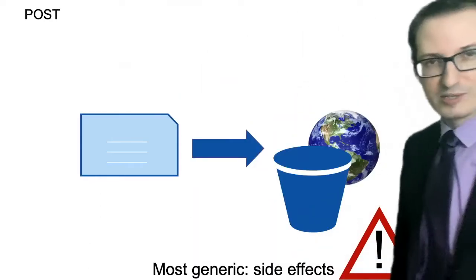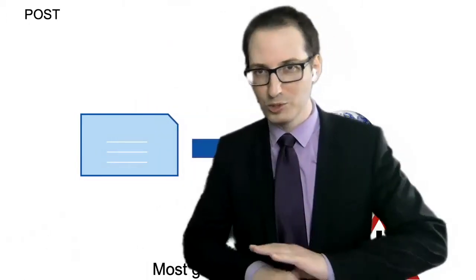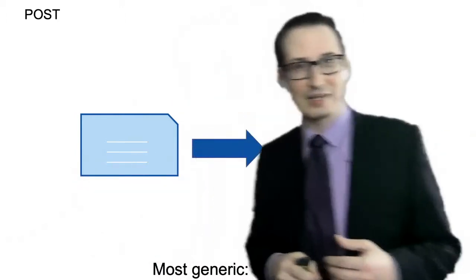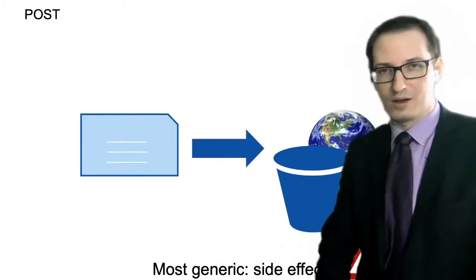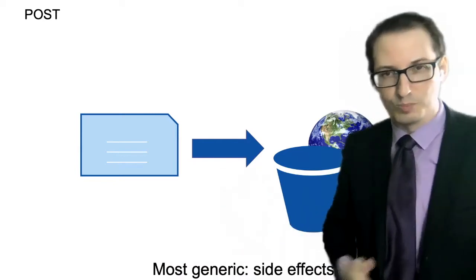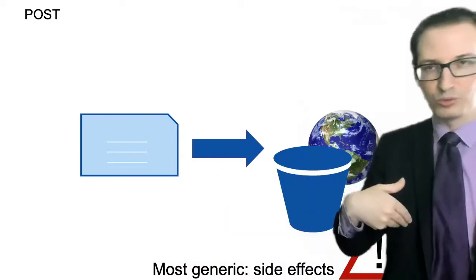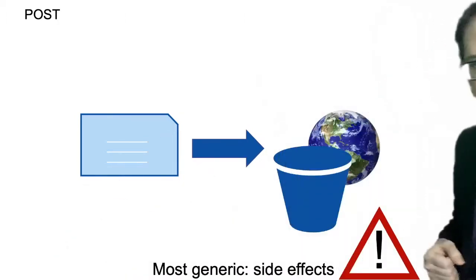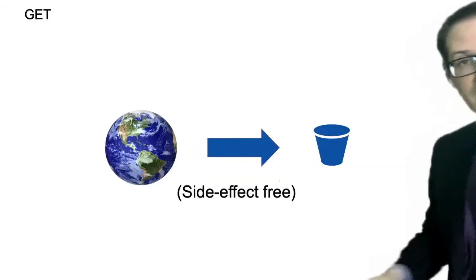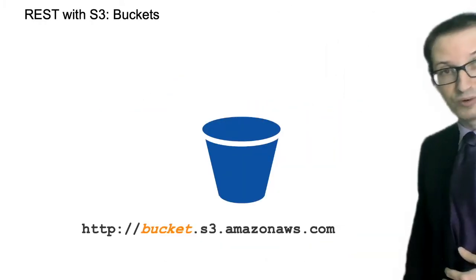POST is the method for everything else. If you don't know which method to use, it's the most universal method that allows you to do whatever you want. For example, if you have a calendar service and need to create a new entry, it won't be a PUT because you'd need to know the ID in advance — which typically you don't. So you POST a request to the calendar service to add a new entry, it returns the ID, and then you can use that ID to complete your entry. The top four HTTP request methods are GET, PUT, DELETE, and POST.